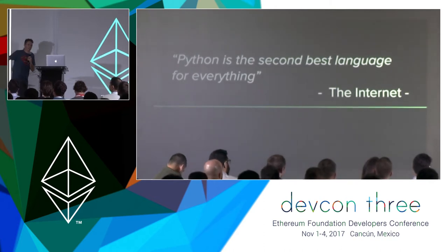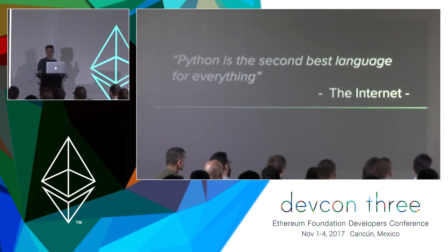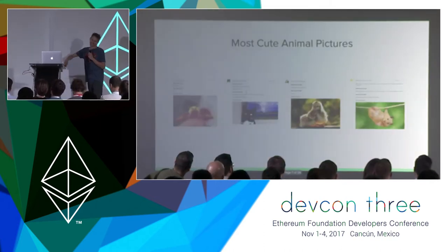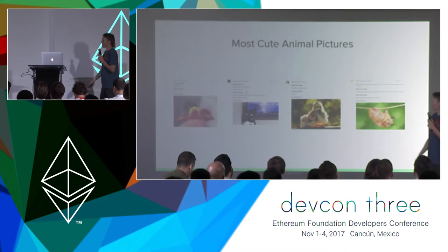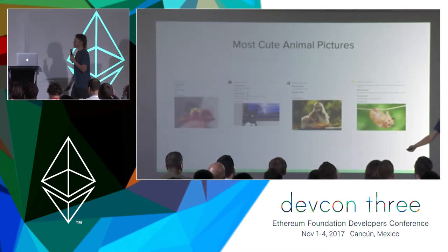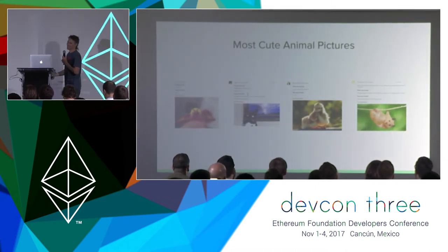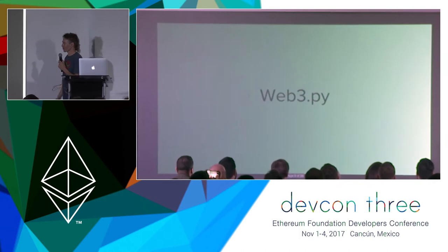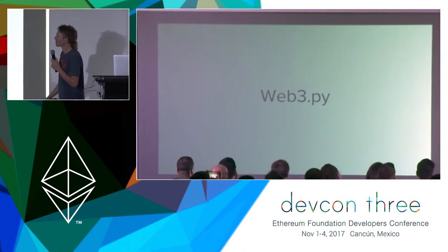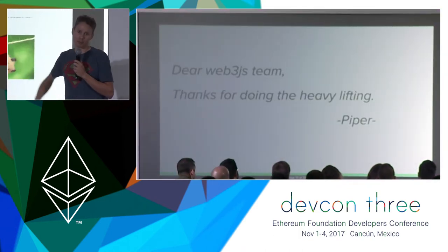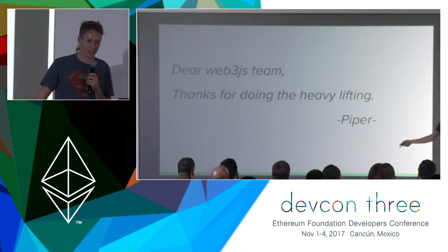And this is my favorite: Python is the second best language for everything. This rings so true to me. Python's got its warts and its problems, but it's also a wonderful language. Also, we have tons of cute animal pictures in our GitHub.